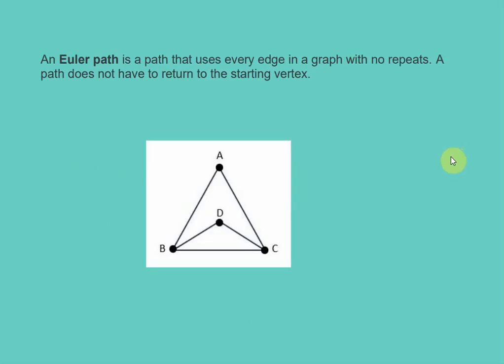An Euler path is a path that uses every edge in a graph with no repeats. A path does not have to return to the starting vertex. So let's look at this figure and find an Euler path.